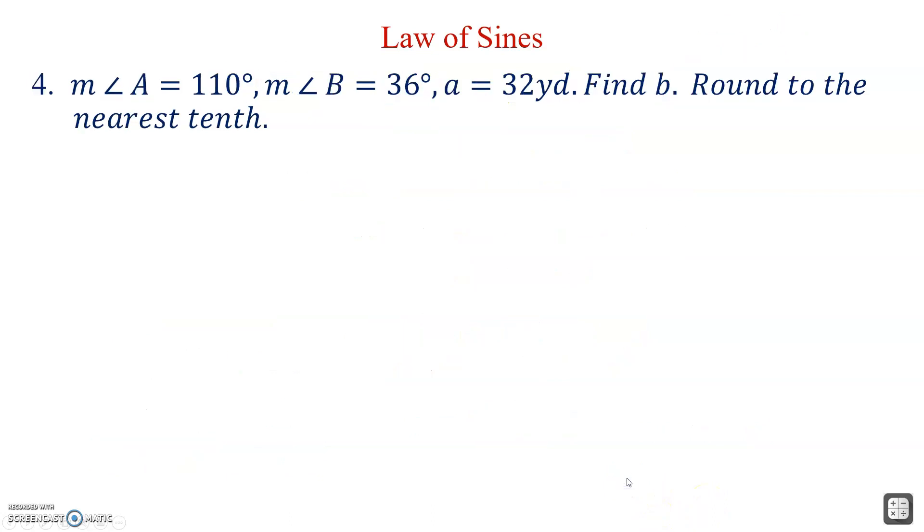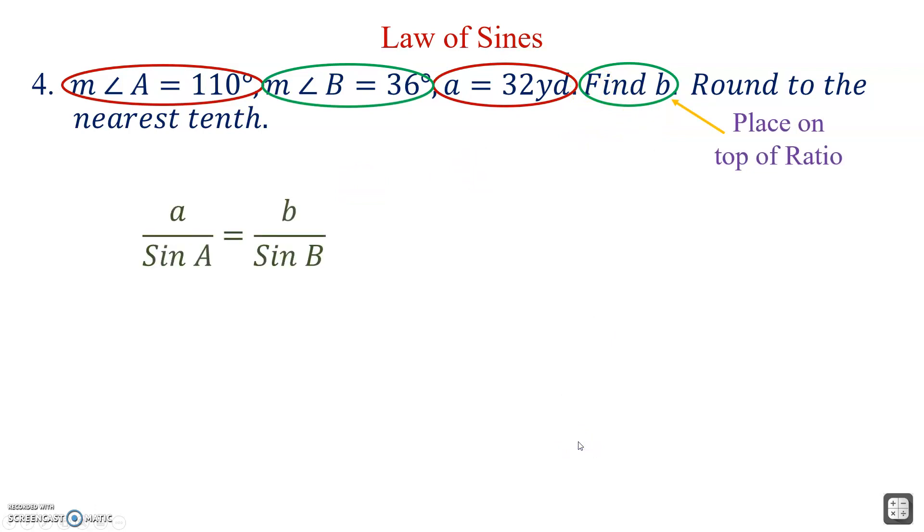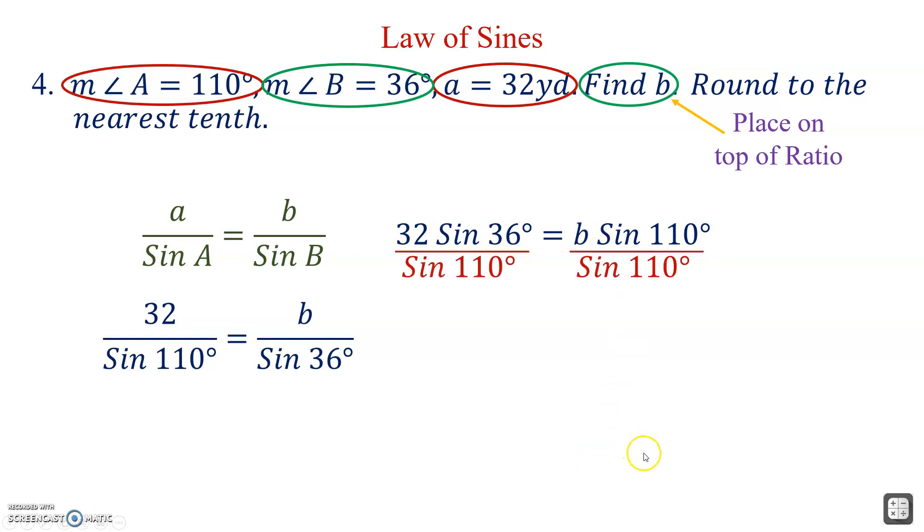One more example. No illustration, so we're going by the variables given. They gave us the measure of angle A and lowercase a, so there's our first ratio. And we're working with angle B and lowercase b, so we're good to go. We're rounding to the nearest tenth. And because we're trying to find lowercase b, that's what's going to go on top. Lowercase is on top. Lowercase a over sine A. Lowercase b over sine B. Substitute. Cross multiply. And let's start putting something into the calculator. Here, to get b by itself, divide both sides by sine 110.